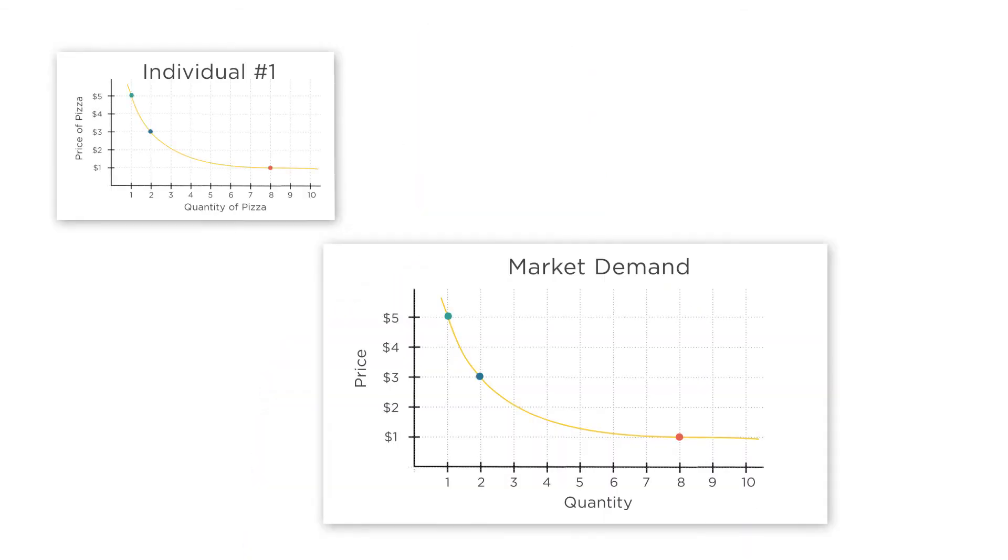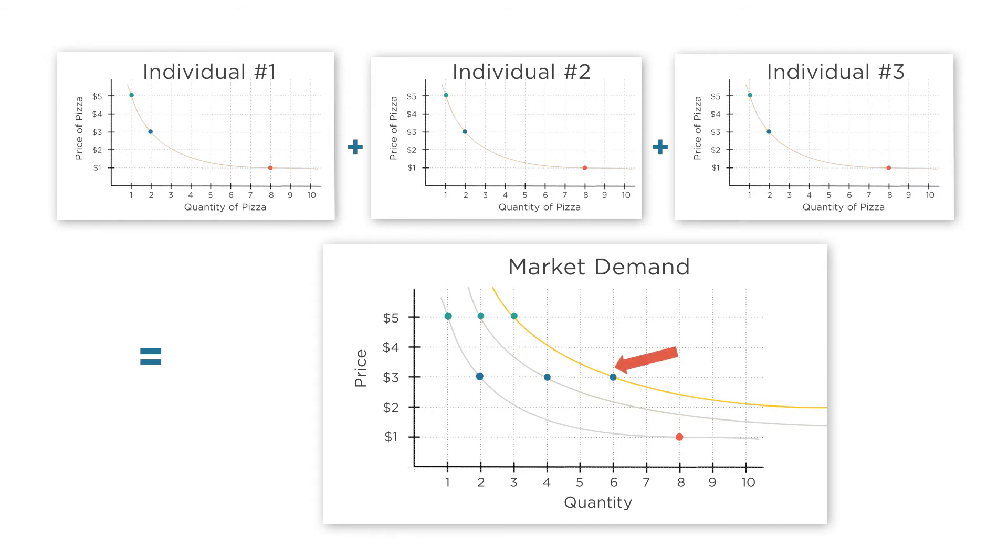So all of this helps us understand where supply curves for individual firms come from. But what about the market supply curve? Just like we saw with demand curves, the market supply is simply the horizontal sum of the supply of all firms in the market at each price.